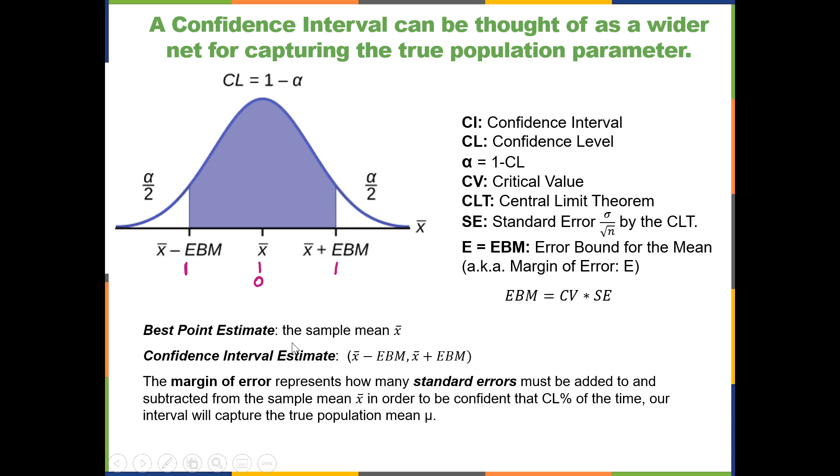The best point estimate is the sample mean x-bar, and the confidence interval estimate boundaries are calculated starting with the best point estimate, which is the sample statistic, then subtracting and adding the margin of error.